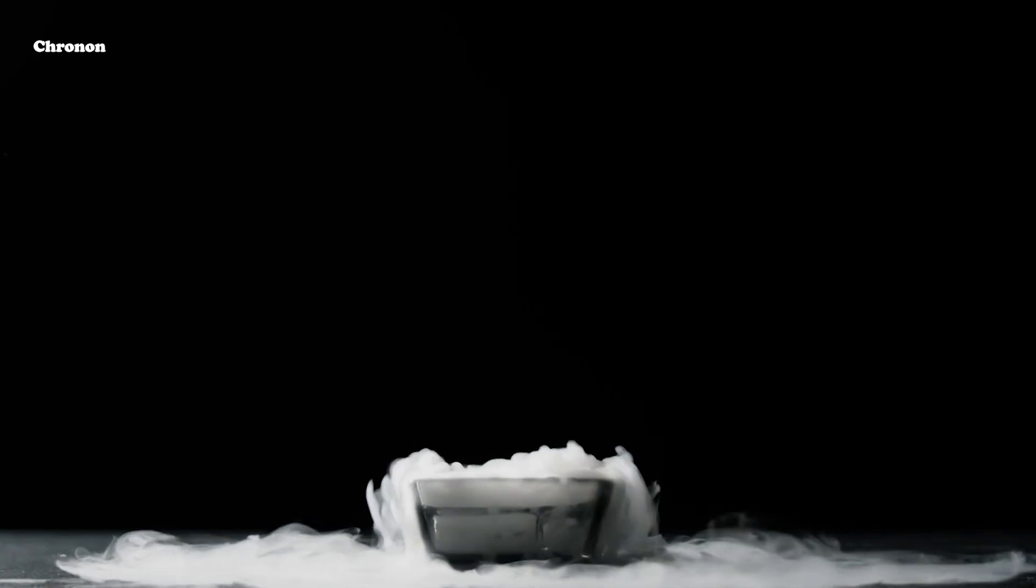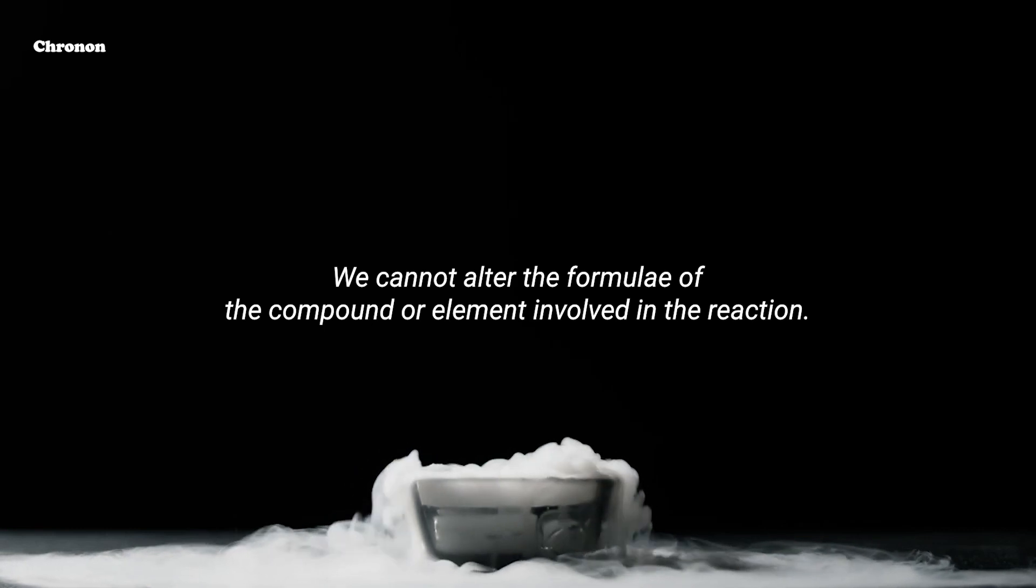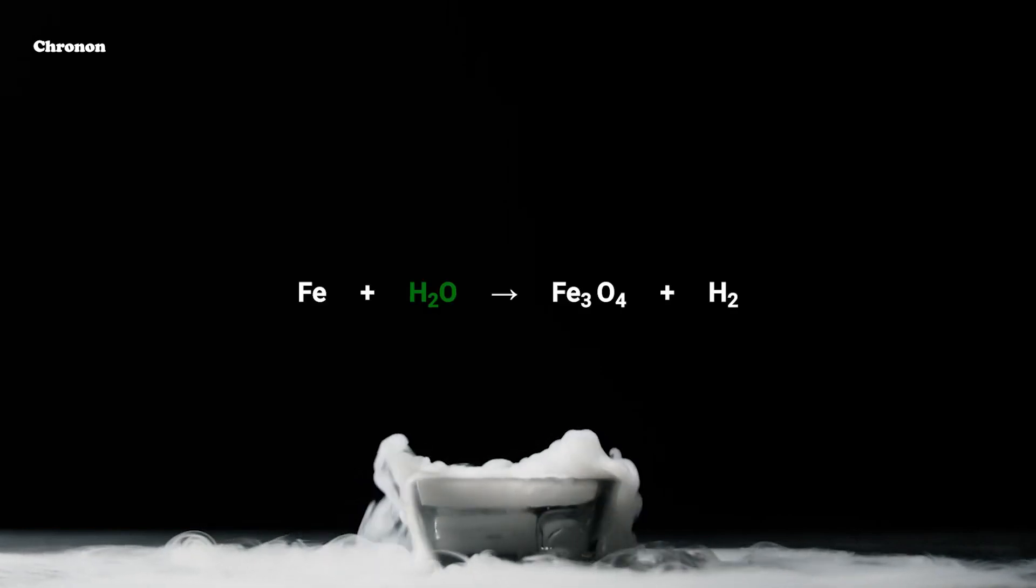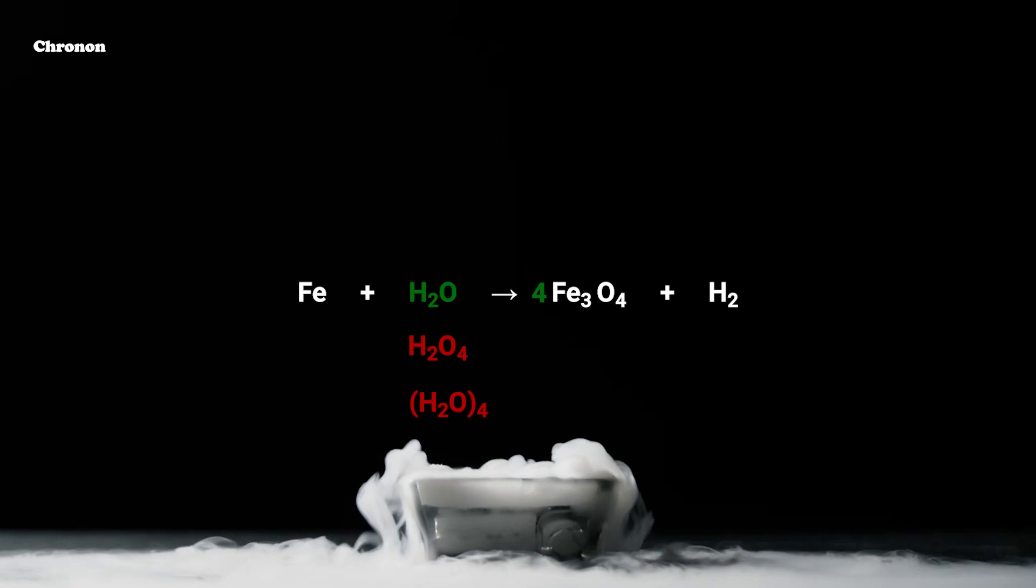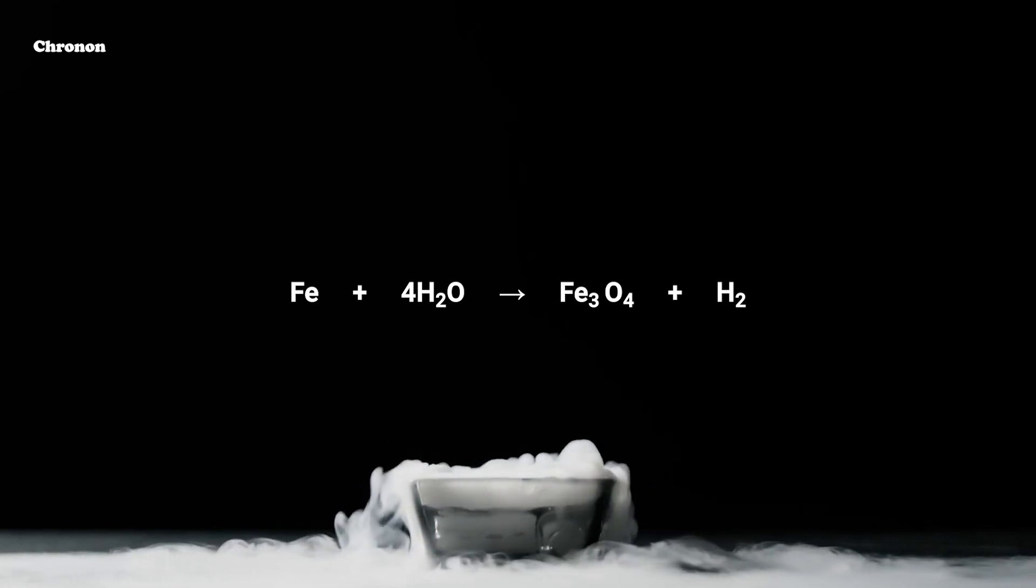To equalize the number of atoms, it must be remembered that we cannot alter the formula of compound or element involved in the reaction. For example, to balance the oxygen atom, we will just put coefficient 4 as 4H2O and not like H2O4. Now the partially balanced equation is this.